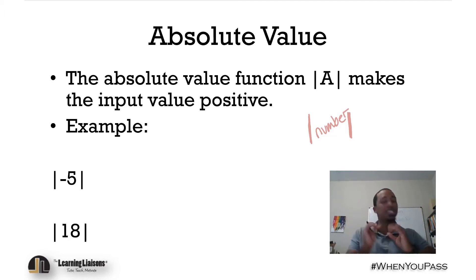Hopefully that makes a little bit of sense because we're gonna tackle these examples now. The absolute value of negative 5 - we're asking basically what's the distance from 0 to negative 5? Well, the distance would be 5 units to the left on the number line, but nonetheless it is 5 units, so that would be 5.